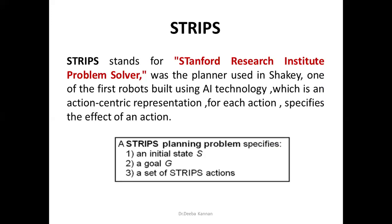For programming representation, there is a standard language — STRIPS language, Stanford Research Institution Problem Solver. This is the first robotic planning language. In STRIPS language, there is an initial state representation, goal state representation, and a set of actions. There is a list of actions that we perform, along with an initial state and goal state representation.